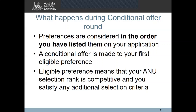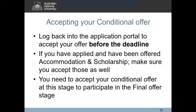Conditional offers will be released in early August, and the offer will clearly identify what the conditions are. Normally these will be conditional on achieving a certain ANU selection rank, meeting any program-specific prerequisites, or English language requirements if applicable. Once you receive your conditional offer, the next step is simply to accept it — log back into the portal and accept the offer before the deadline. If you have been offered accommodation or scholarships, please make sure that you accept these offers as well. You need to accept your conditional offer in order to participate in the final offer stage, even if the offer is not to your preferred program.